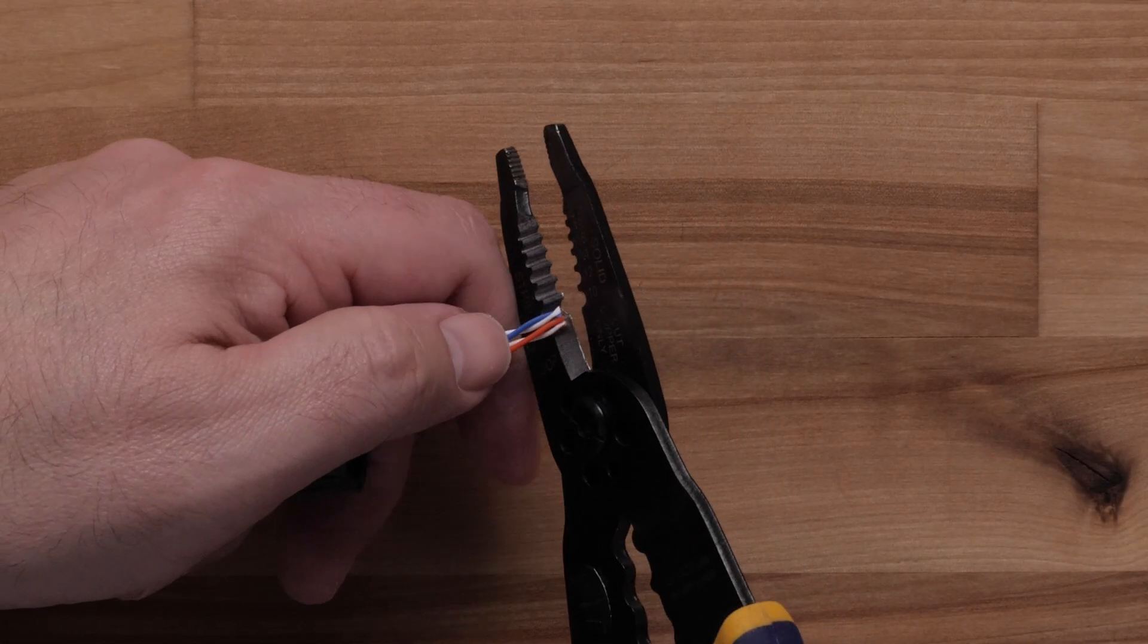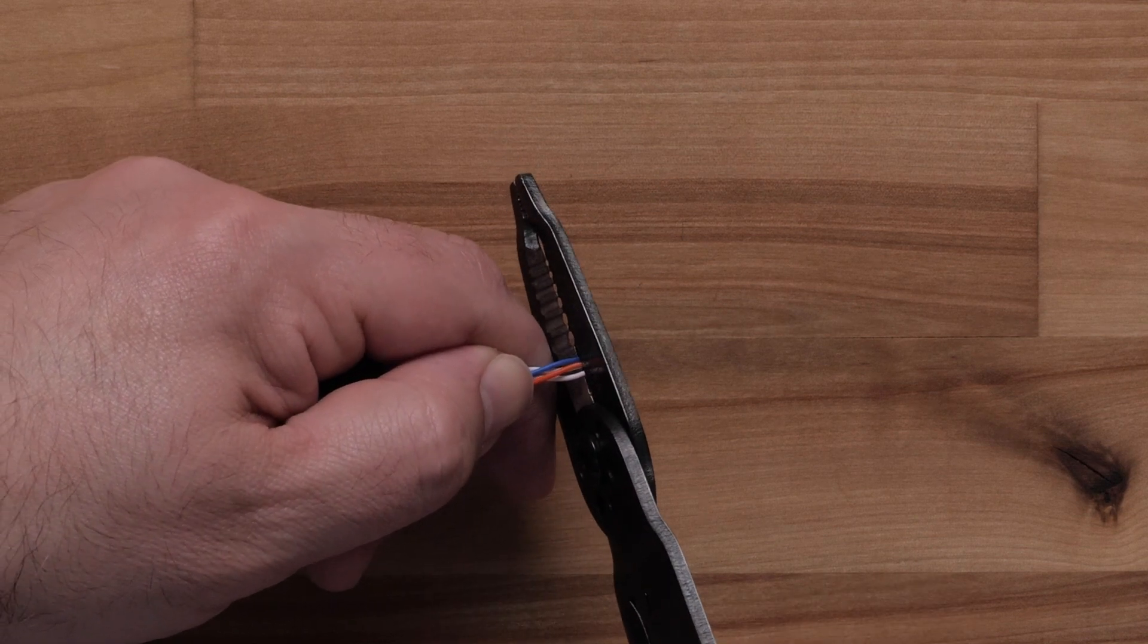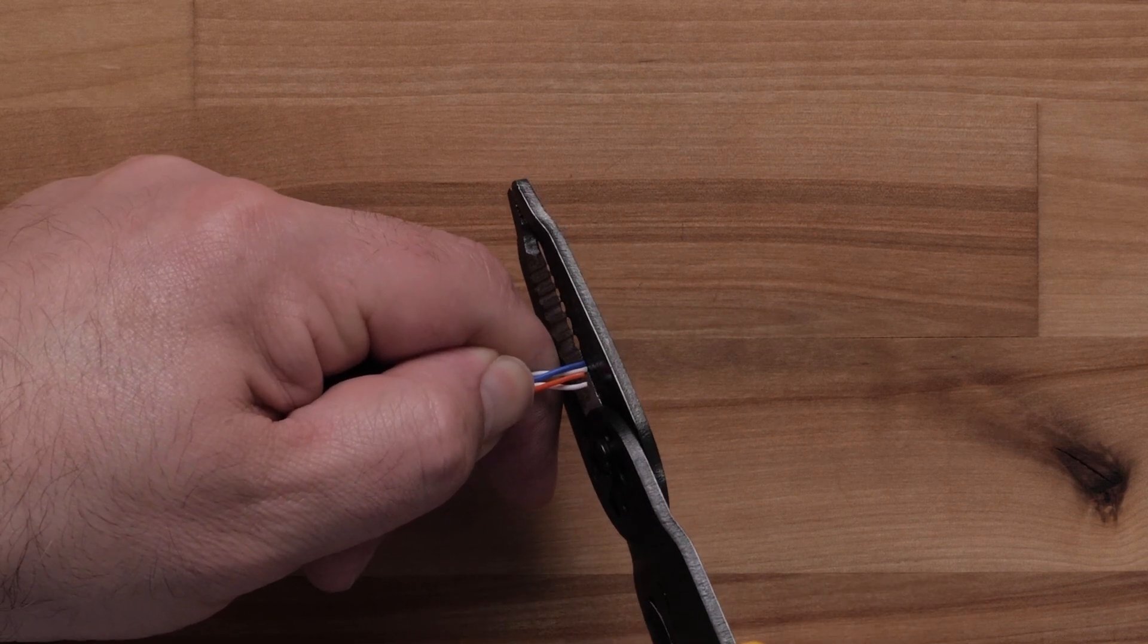Trim the arranged wires to an even length. Leave approximately 14mm or 9.16 inch from the ends of the wires to the jacket edge.